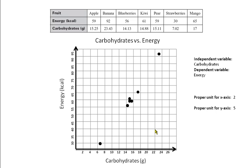Now we've got all our points plotted. Notice that they're really spread out — this isn't nicely distributed data, and that's what happens with real-life data; it isn't always going to look really nice. So what we need to do now is draw a line of best fit. That means drawing a line that kind of approximates what this data is doing, and we want to make sure there are the same number of points above the line as below it. Let's go ahead and put something on here.